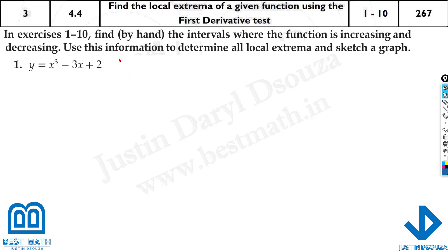If you have to find the absolute maximum and minima, we used the direct shortcut method in the calculator for question number 2. We can use the same thing. Increasing and decreasing functions can also be done by the mode 7 method. First, we find the derivative — it will be 3x squared minus 3.